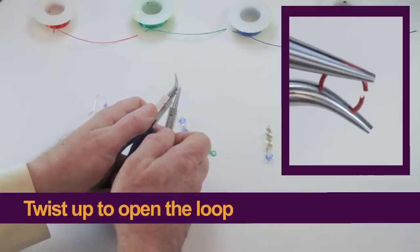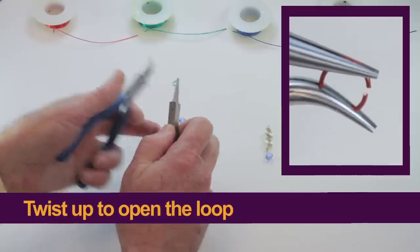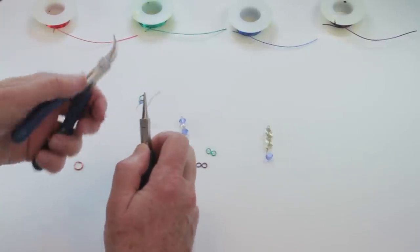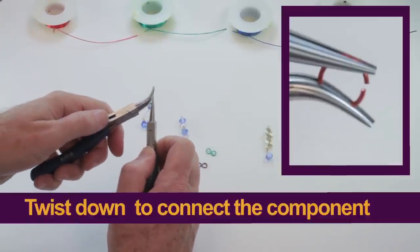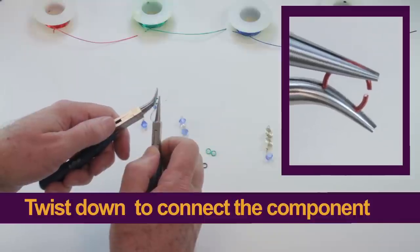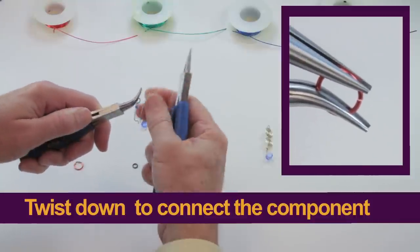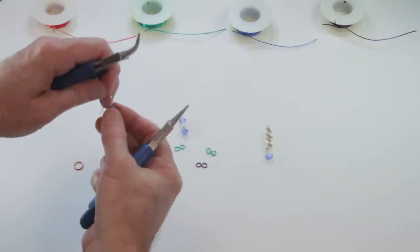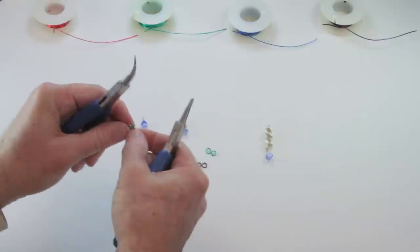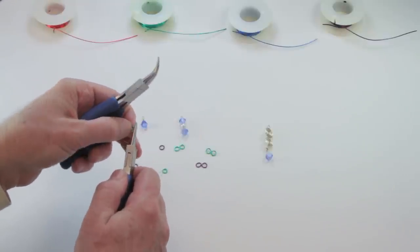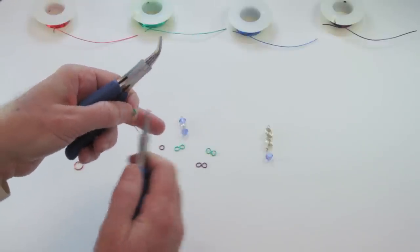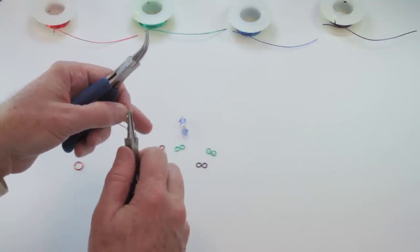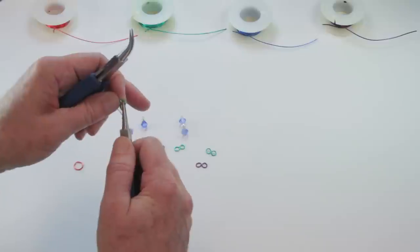And then we twist up, and we can connect it to the earring. And then we twist down. And so you can see that now the two components are connected. What I'm going to do is twist up to open, connect the earring body, twist down to close.